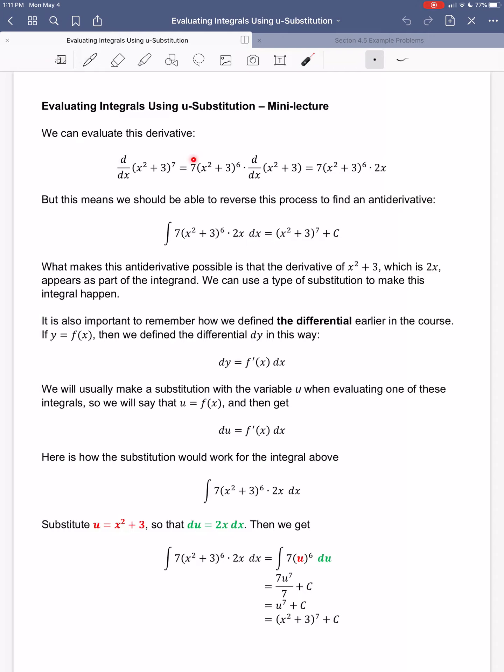But since that's a derivative, I should be able to go backwards by doing the antiderivative. So if I start on the right and take the antiderivative, I should get back to the left. So that's what I have written here. So what makes this antiderivative possible, if we just saw this out of nowhere, I wouldn't know how to take this antiderivative.